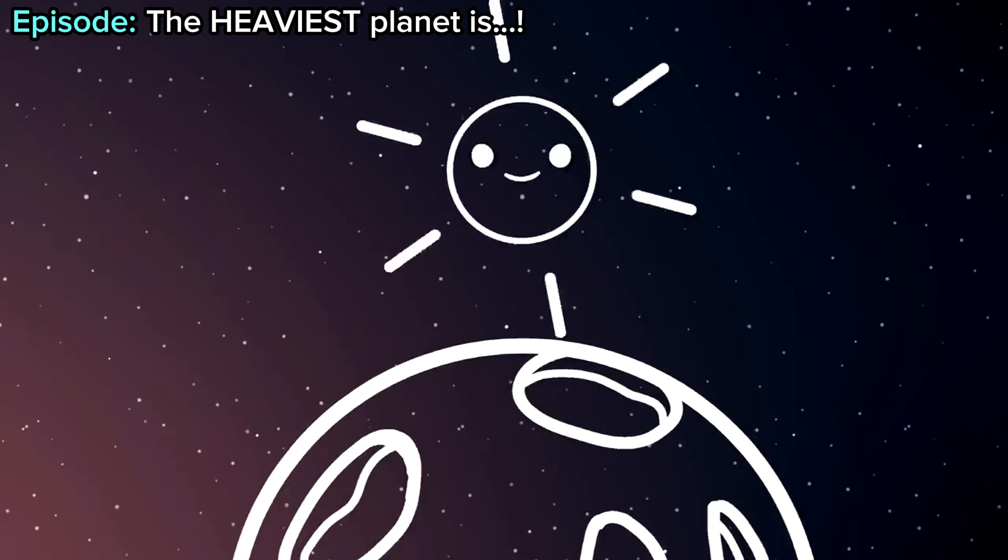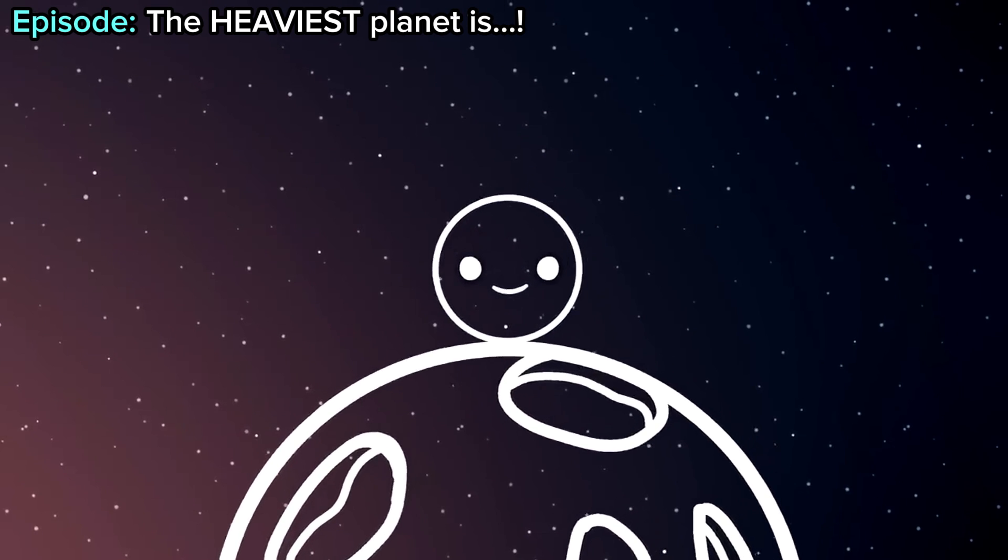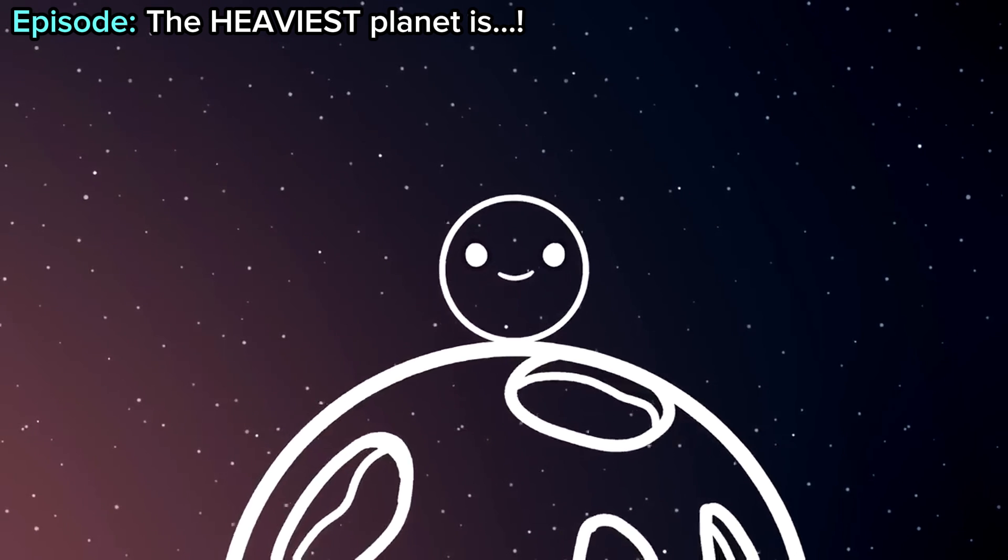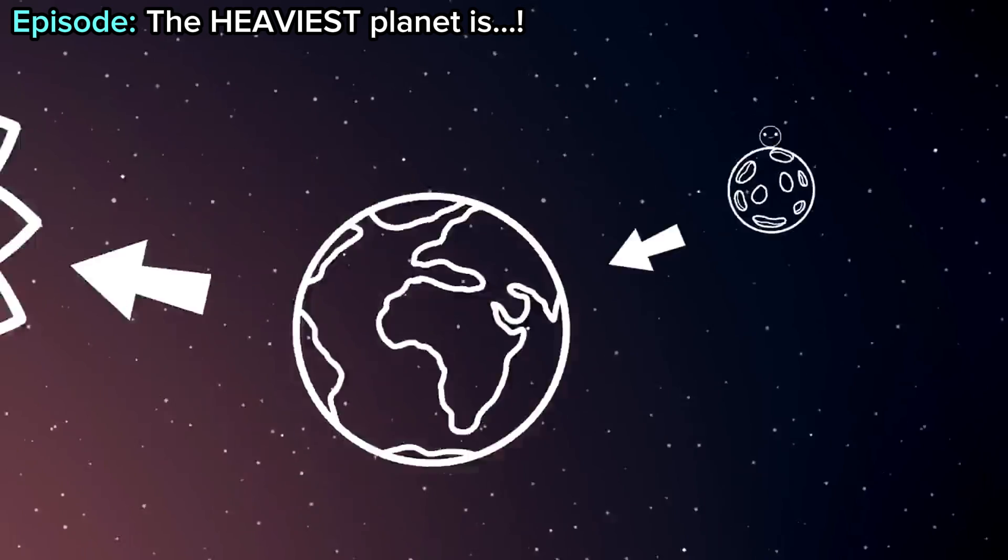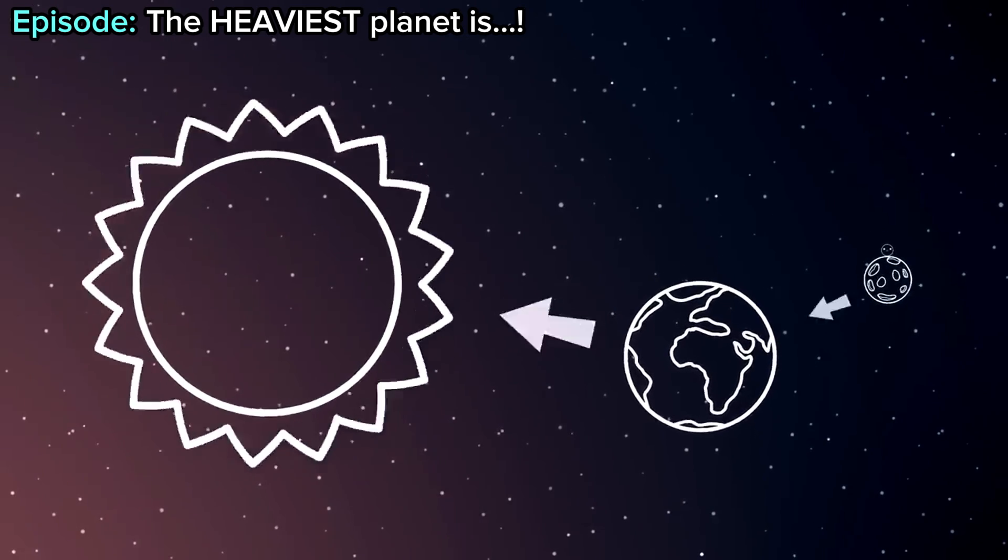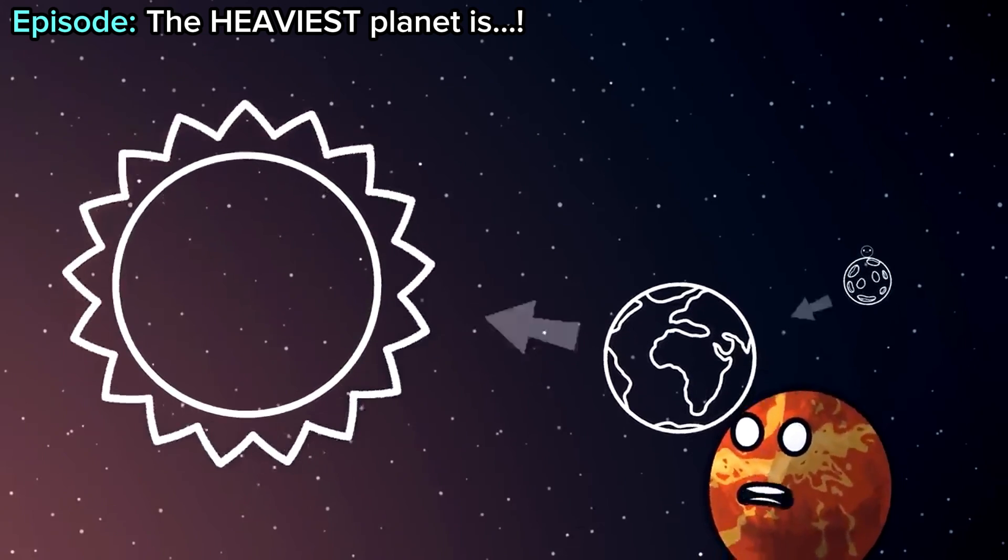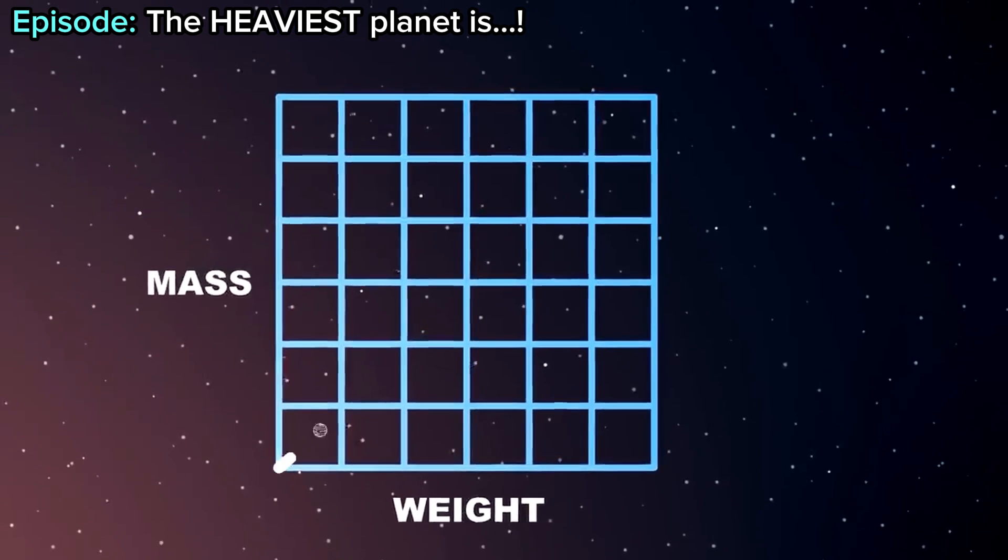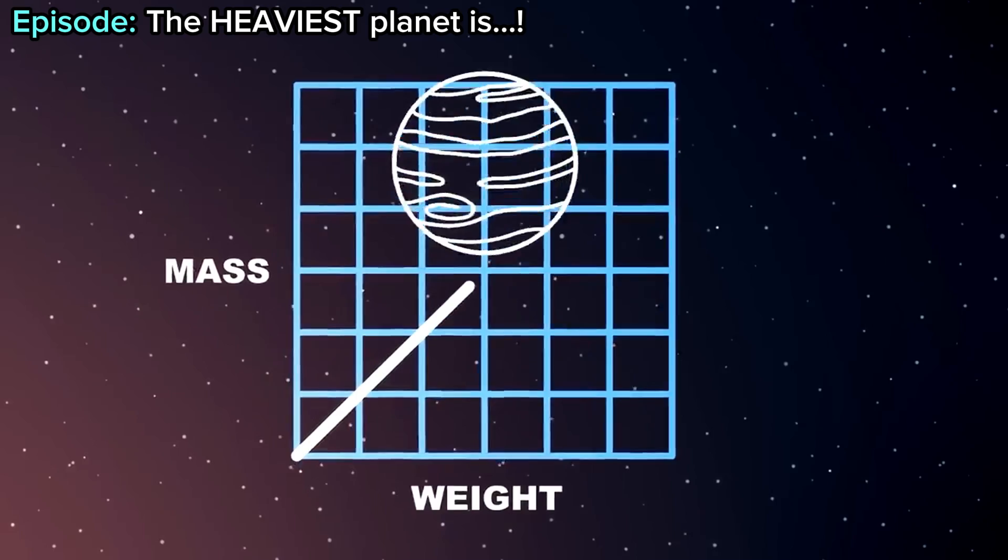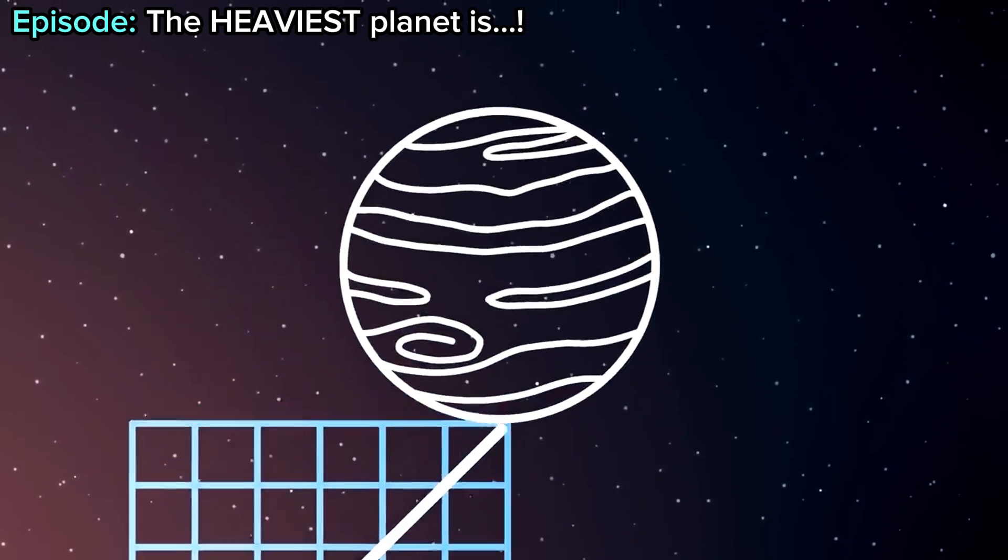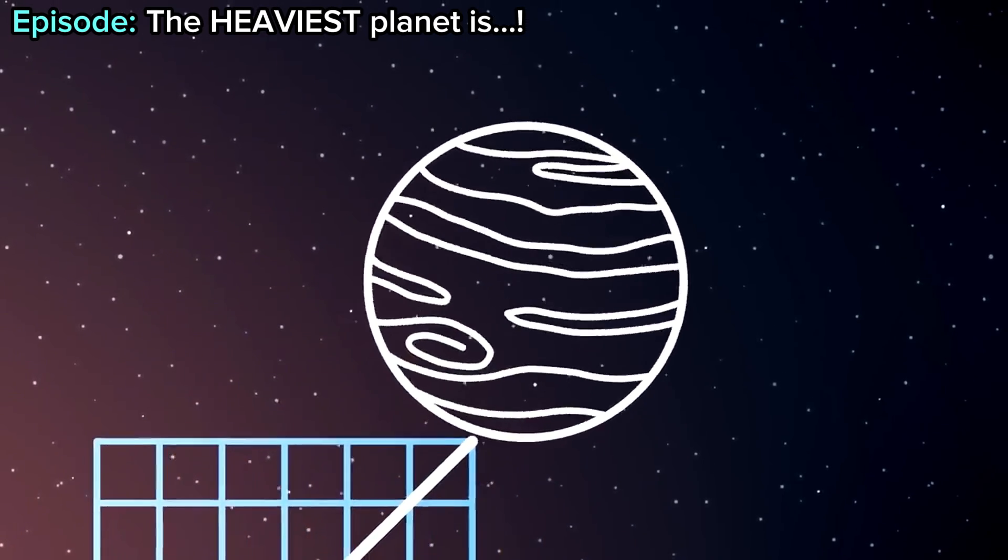When your Earthlings were on the moon, the moon pulled them in, right? But you have stronger gravity, so you pull in the moon. And the sun's is even stronger and pulls you into his orbit. So why do some of us have more gravity? The strength of gravity is based on how much mass something has. And the more mass something has, the more it weighs. So something with stronger gravity is also heavier.